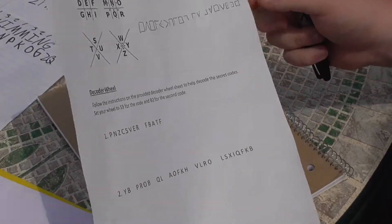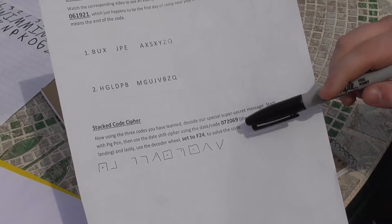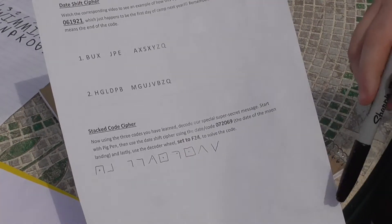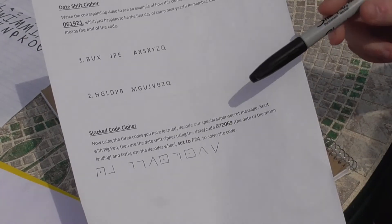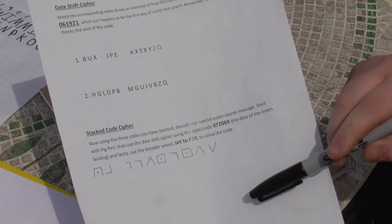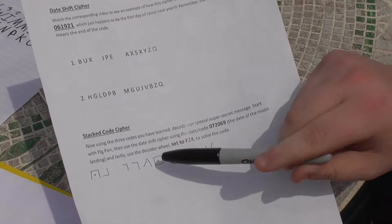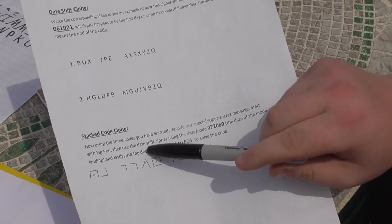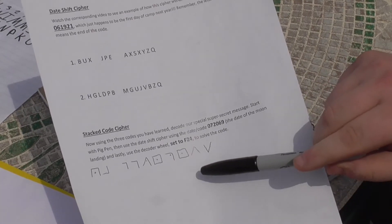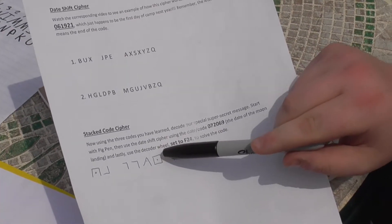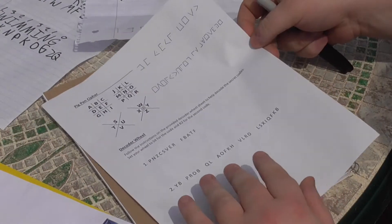And then on the back here is also another type of cipher called a stacked code cipher, where you use multiple ciphers to uncover a message. So we're using the ones that we learned. Right here we have the pig pen cipher. If you read the instructions here, you'll know that the date shift cipher is next once you crack that one, and then use the decoder wheel to finish the last cipher.